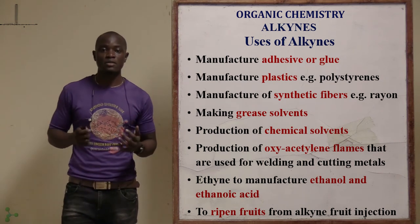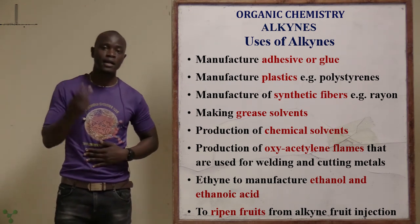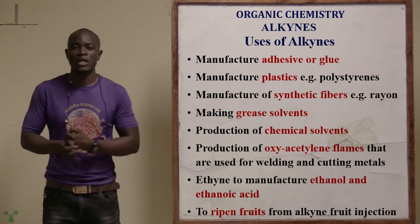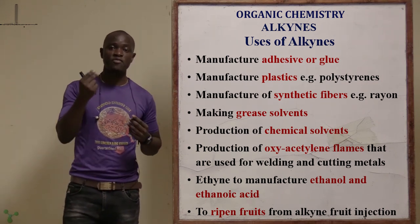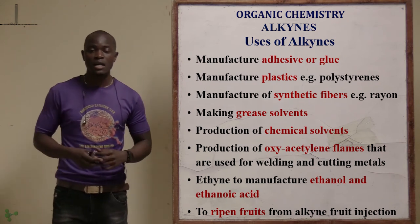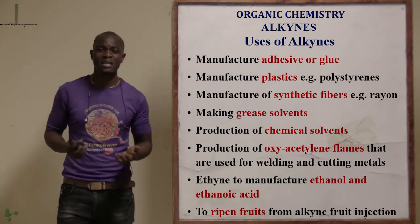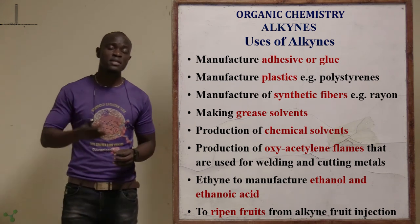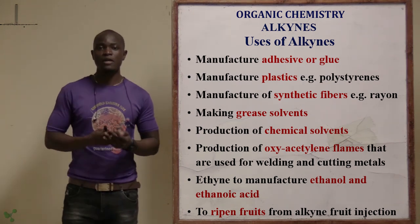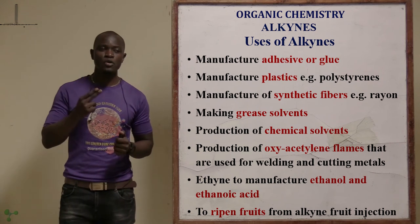What are the uses of alkynes? They are used in the manufacturing of adhesives (glues) and in the manufacture of tough melamine plastics. They are used in the manufacture of synthetic fibers such as rayons. They are used as grease solvents because of their high melting and boiling point. They are used in the production of different chemical reagents. They are also used in the manufacture of oxyacetylene, which is used in welding and cutting metals because it produces very high heat.